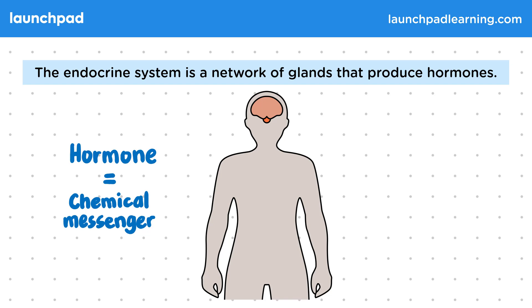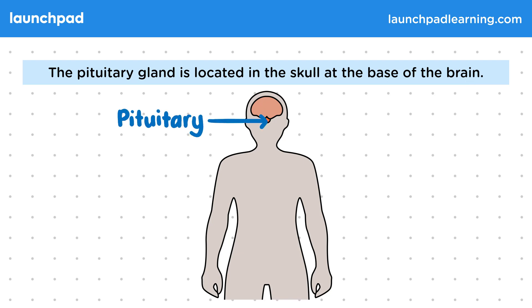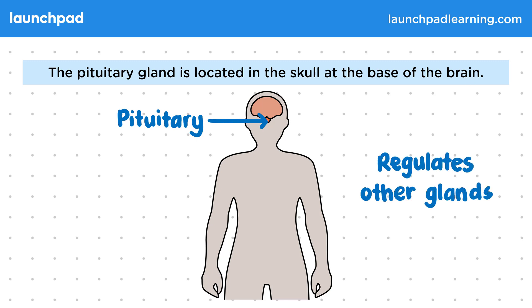So which gland is shown in this image? The pituitary gland is located in the skull at the base of the brain. It's only very small — in fact, it's pea-sized. This gland is attached to the base of the brain, but it isn't part of the brain itself. The pituitary gland regulates other glands in the body. Let's have a look at the other glands that the pituitary communicates with.